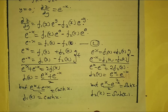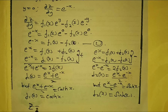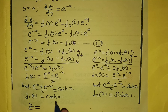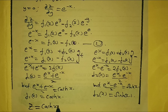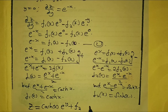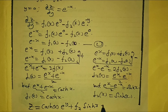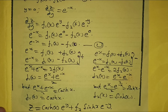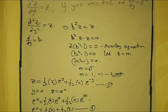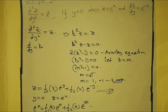Our final solution is found by substituting back into the general equation. Replacing f₁(x) with cosh(x) and f₂(x) with sinh(x), we get z = cosh(x)e^y + sinh(x)e^(−y). Thank you.